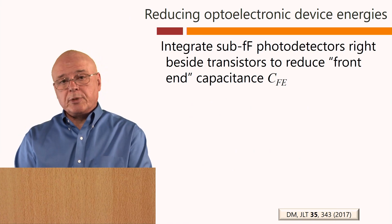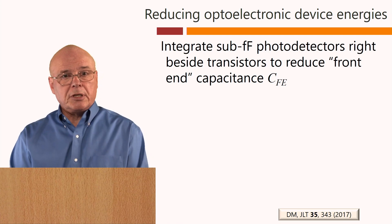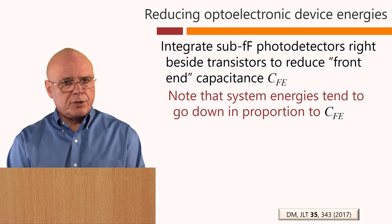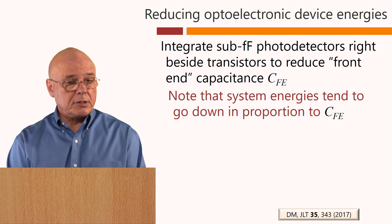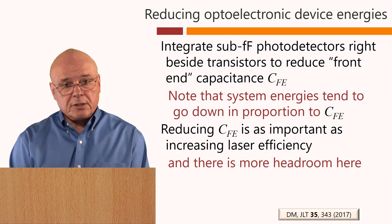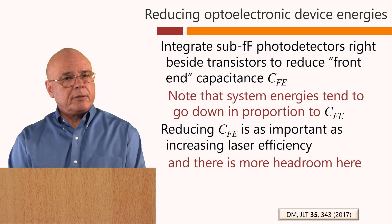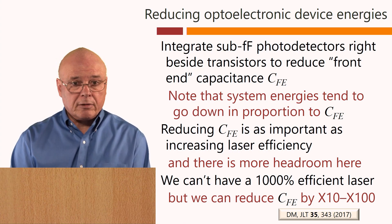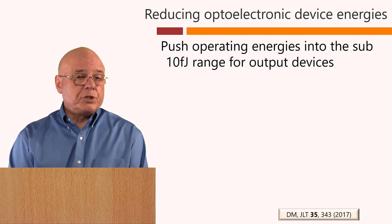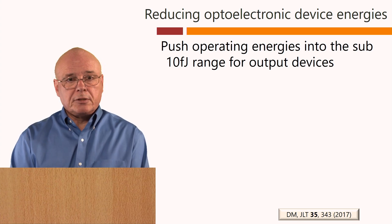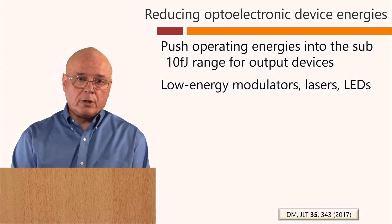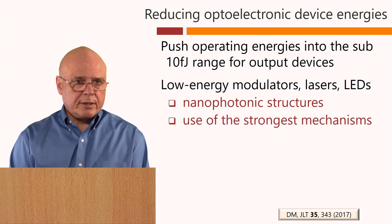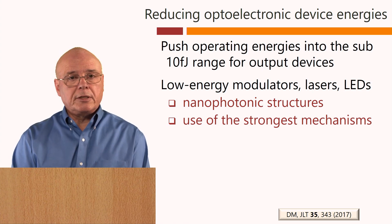To exploit quantum impedance conversion, we should reduce the energy required to run optoelectronic devices so that the energy to send information optically becomes less than that required to send it on wires — even for short distances down to centimetres. Integrating sub-femtofarad photodetectors right beside transistors can reduce the front-end capacitance CFE, and the total system energy tends to go down in proportion as this capacitance is reduced. We can't have a 1000%-efficient laser, but we can reduce this capacitance by a factor of 10 or even 100.